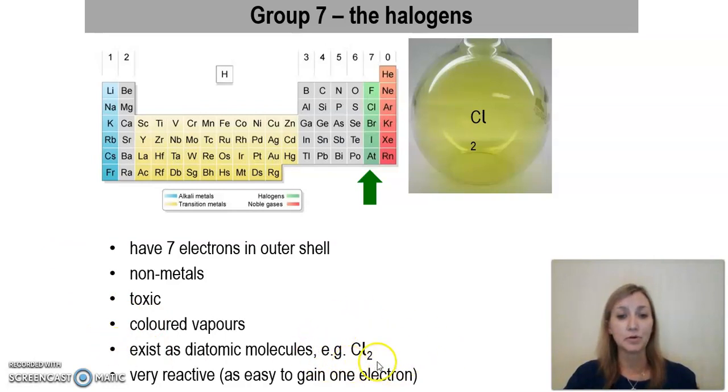They also exist as diatomic molecules. For example, chlorine forms a diatomic molecule, diatomic meaning two atoms, so two chlorine atoms joined together in one molecule.